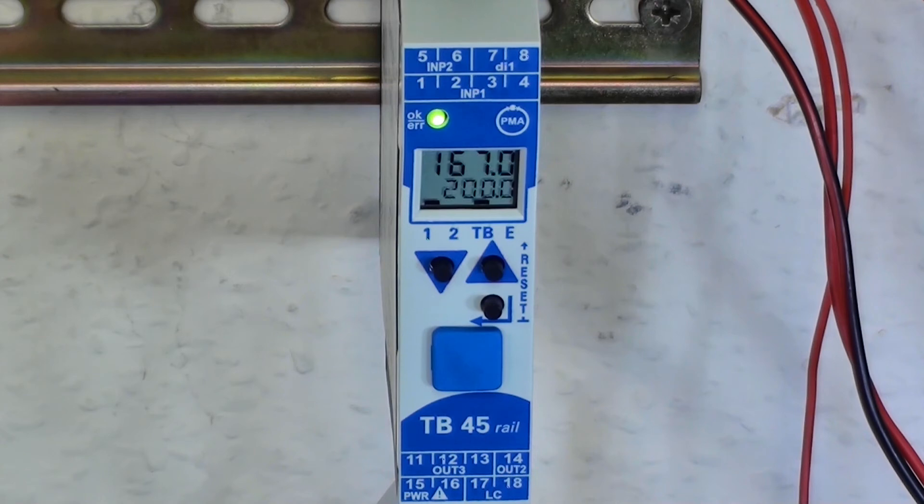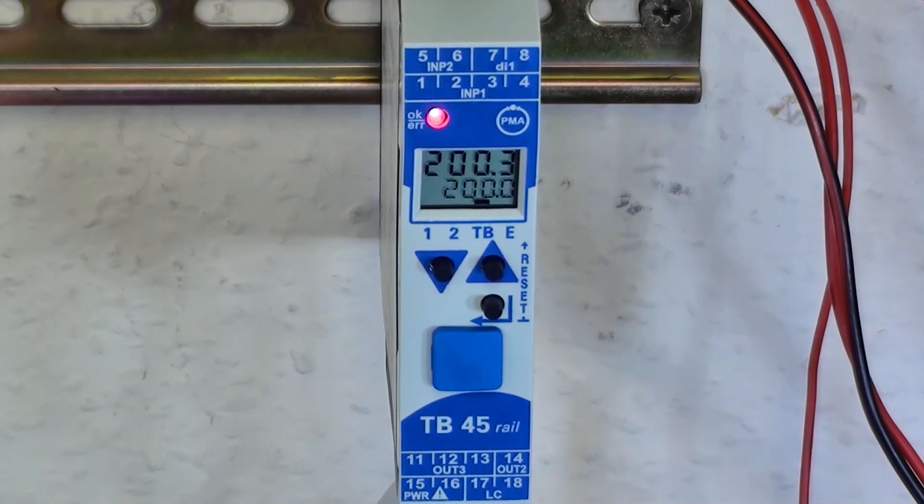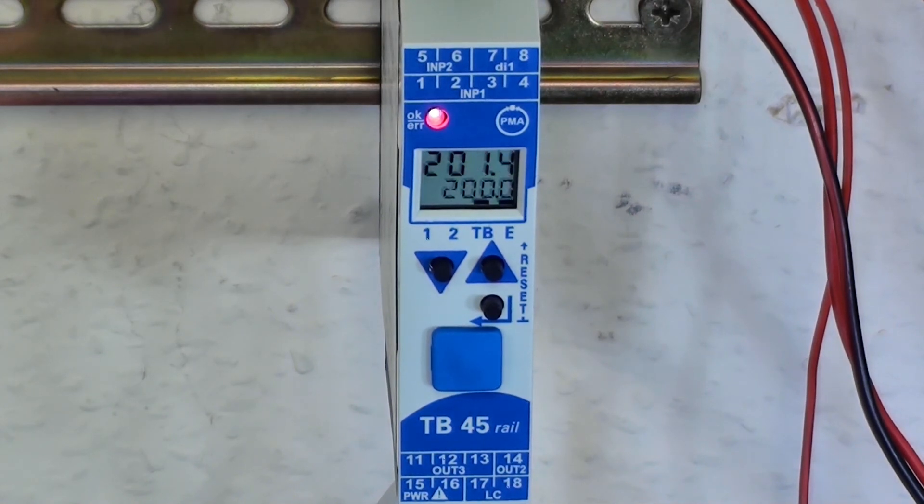As I go further past 200 degrees C, you'll see that this changes. So that has gone, but we now have E, the exceed light that is flashing. So I'm above 200 degrees C, the exceed condition.